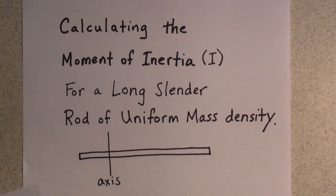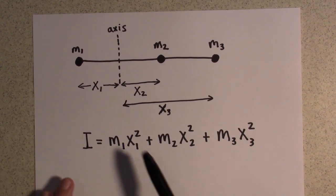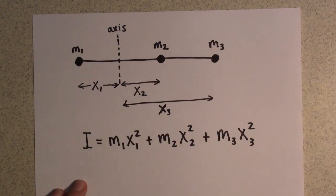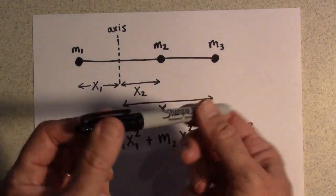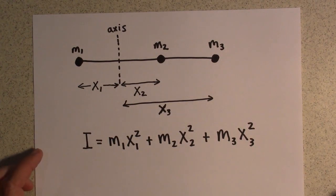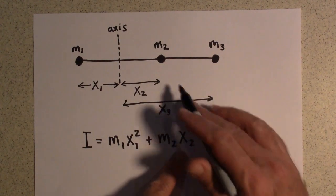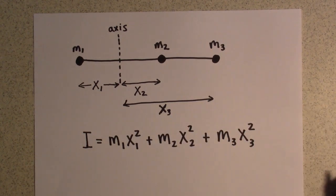We're going to be using this relationship: imagine you have three masses m1, m2, and m3 on a rod of negligible mass. If you want to know the rotational inertia — how sluggish it is to rotate about an axis — you use the equation: I = m1·x1² + m2·x2² + m3·x3², where each x is the distance from the axis.